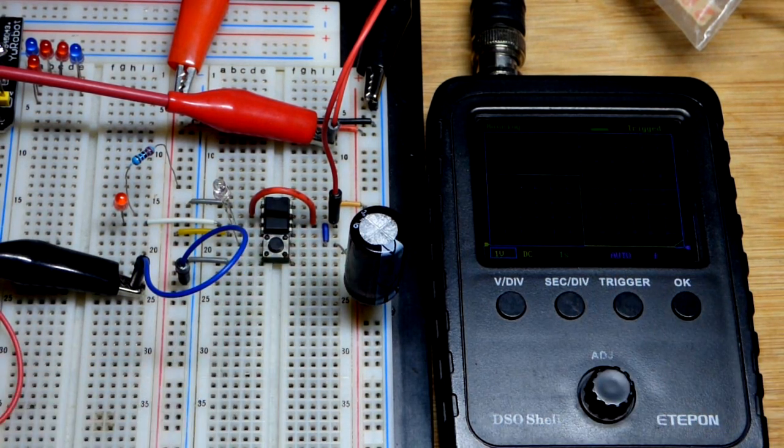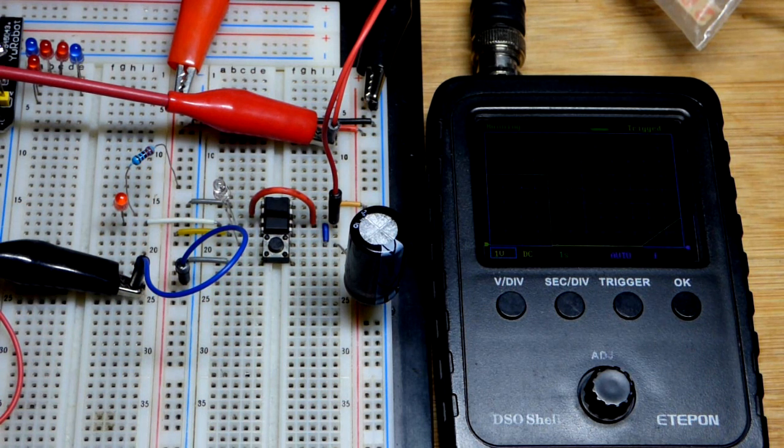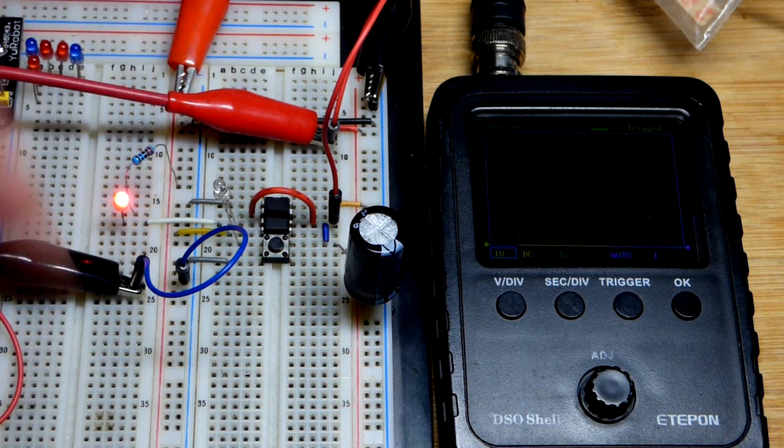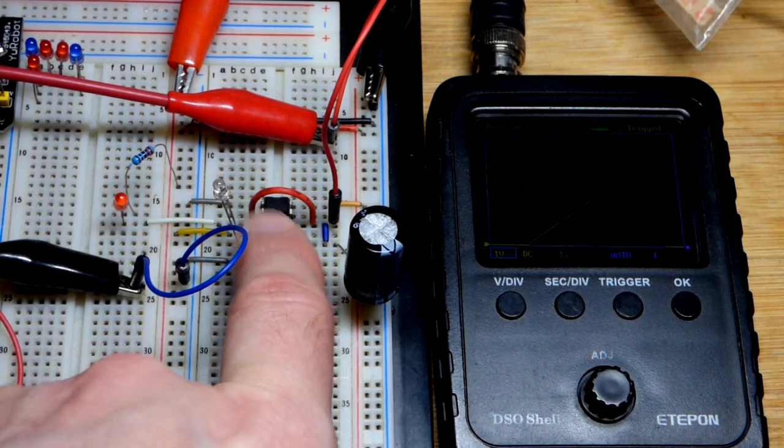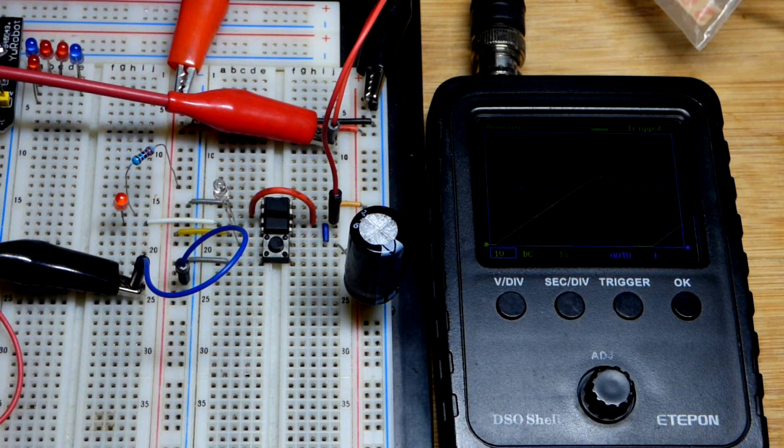It goes down to zero volts. Soon as I release it, based on how much light is falling on the photodiode, you can see how fast the capacitor is charging and it's relatively fast right now. Once the...